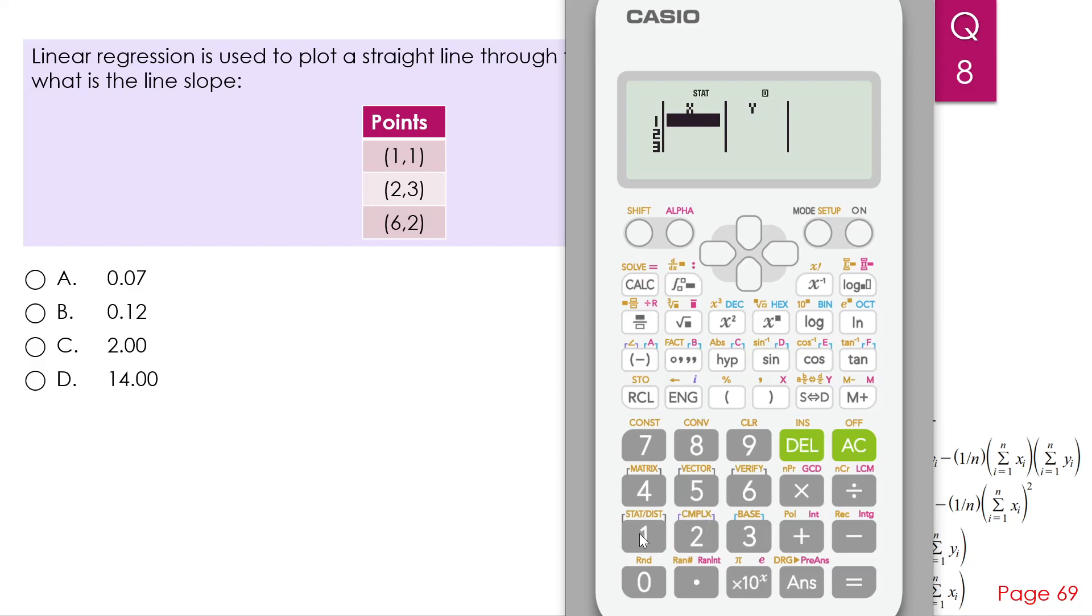So X is 1. The other X is 2. The third X is 6. You go to the other side. The first Y is 1. The second Y is 3. And the third Y is 2.